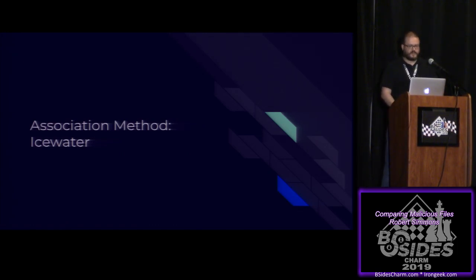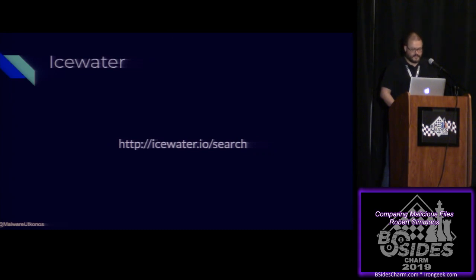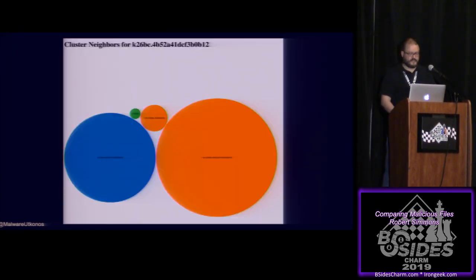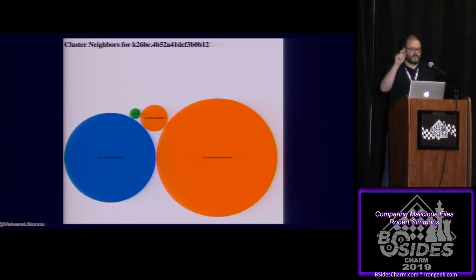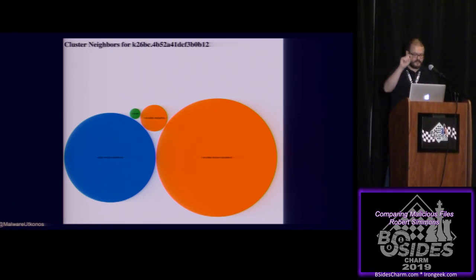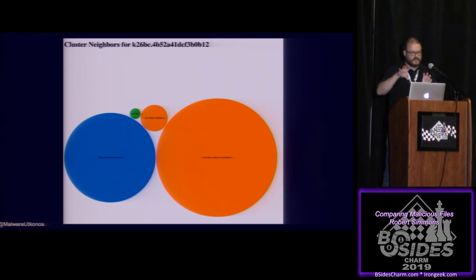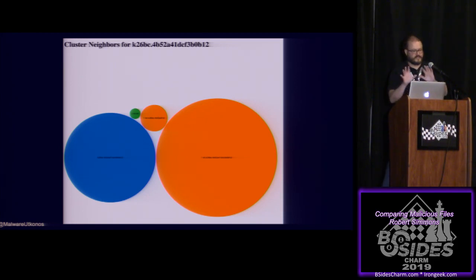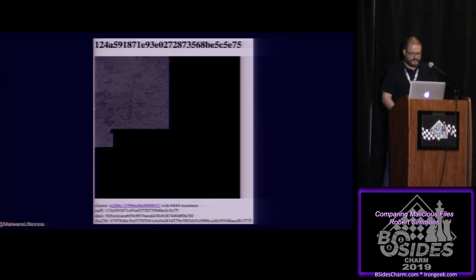Another association method is IceWater at icewater.io/search. You can take an MD5, SHA1, or SHA256 and plug it in there, and based on IceWater's clusterization algorithm you can find other files related to that file within a particular cluster. Orange clusters are a one-bit difference in the cluster ID; green clusters are a two-bit difference. You can find clusters near the one you're looking at and perhaps find other builds of a malware family. You also get a graphical visualization of the file and a few data points including hashes.